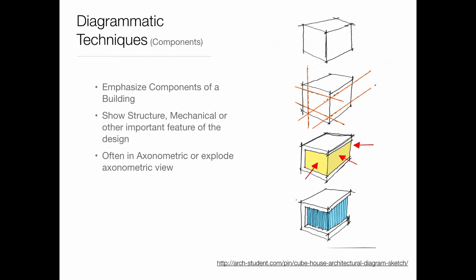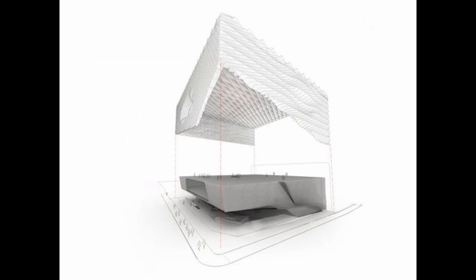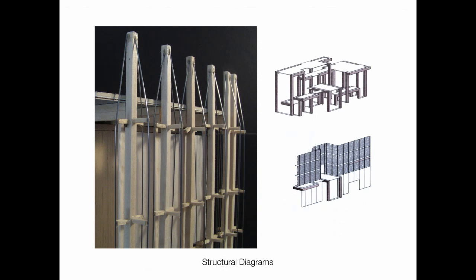Sometimes you want to diagram specific building components — the skin against the core, the structure against the rest, or how the building heats and cools. A lot of these are done in exploded axonometrics or exploded perspectives, where you lift up or pull off part of the building to see inside. In this example, the skin is lifted up so you can see the core underneath. Sometimes it's about how columns flow through the building or how the skin attaches or wraps around.